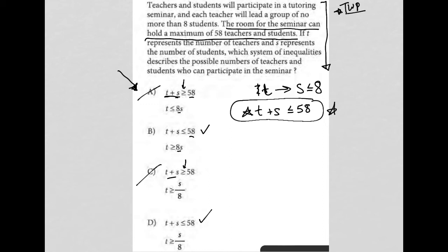I'll keep reading. If T represents a number of teachers and S represents a number of students, which system of inequalities describes the possible numbers of teachers and students who can participate in the seminar? So here we have this information, but how do I combine all that together with T, S, and 8? As I can tell, that's what I need to do based upon the second option here. So we know that the number of students is going to be less than or equal to eight times the number of teachers.